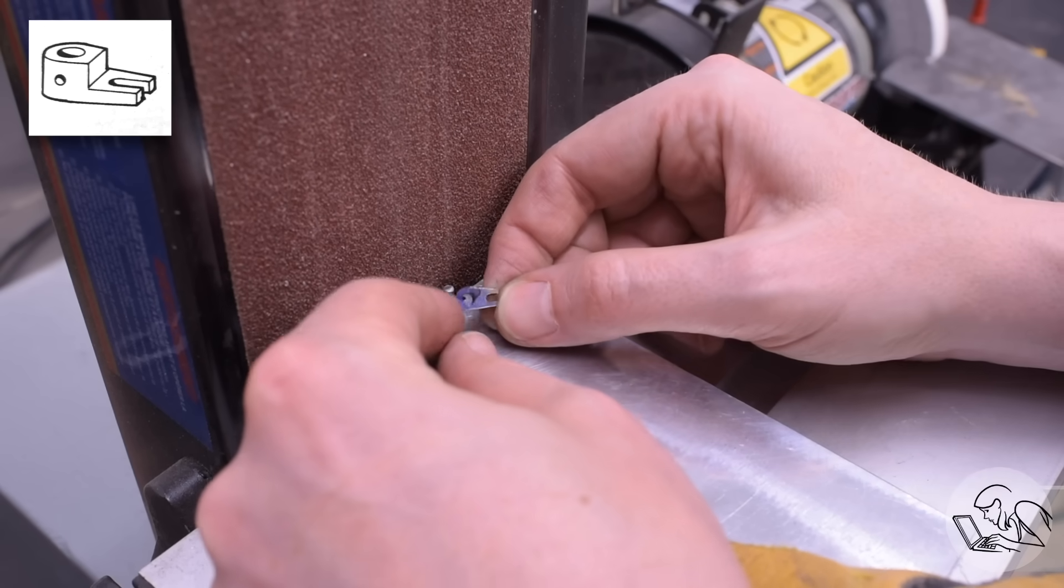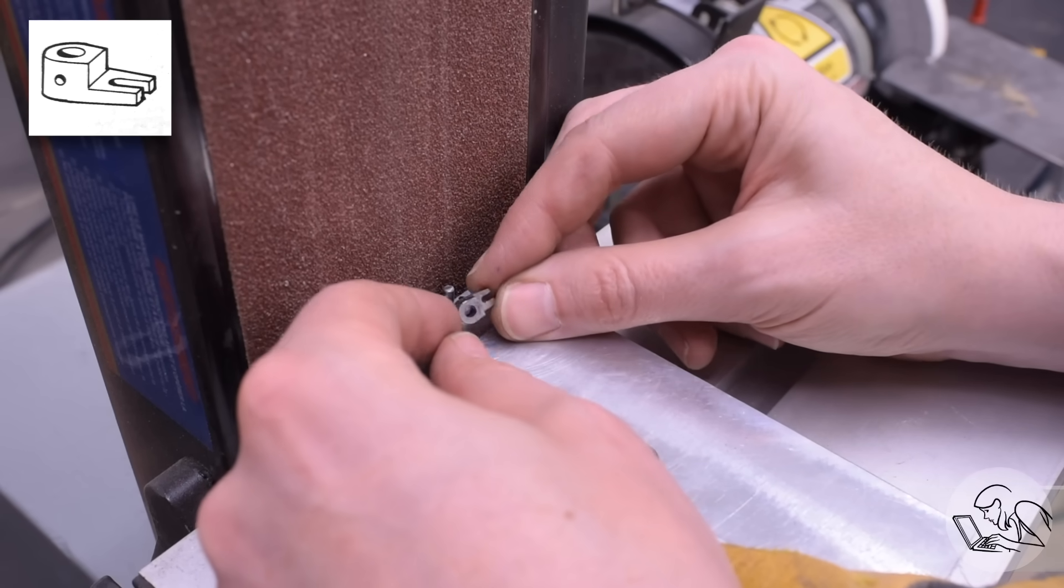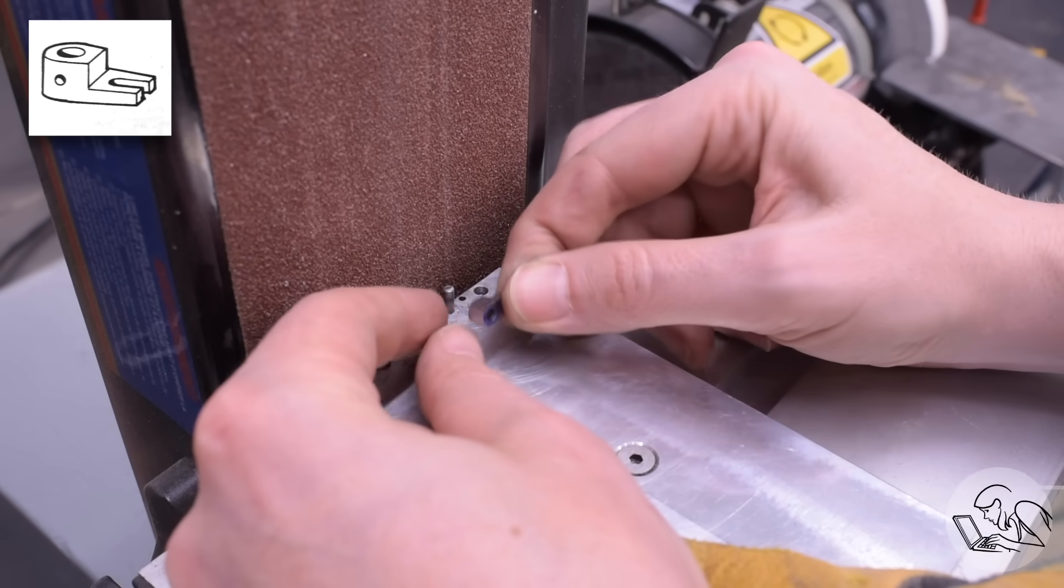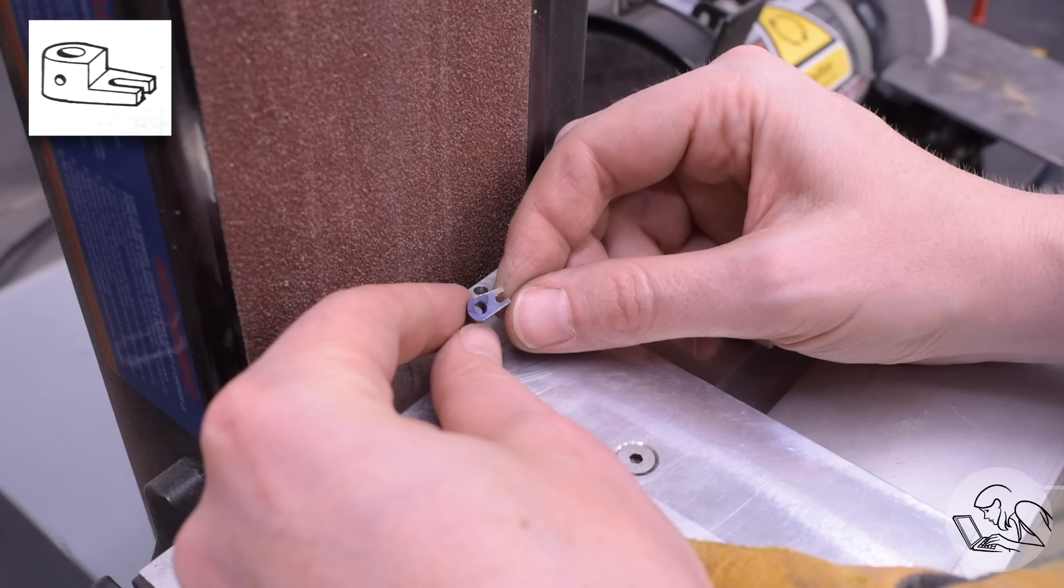Those all need some cleanup and deburring but otherwise they are effectively done. Looking very good indeed. Since someone's going to ask, the little hole that you see in the drawing is for cross pinning this to the shaft. We can't do that yet because we need to set the angle of it so that will be done on final assembly.